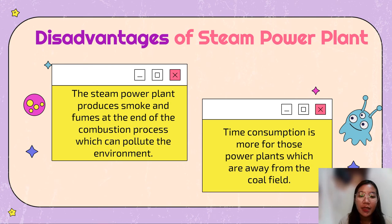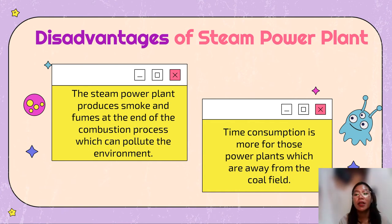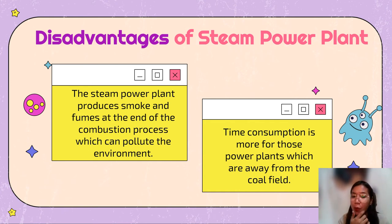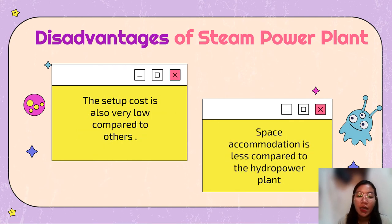The disadvantages of the steam power plant are: first, the steam power plant produces smoke and fumes at the end of the combustion process, which can pollute the environment. Second, the time consumption is more for those power plants which are located away from the coal field.